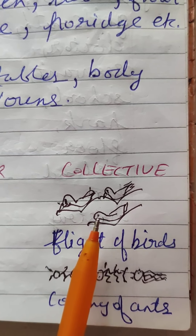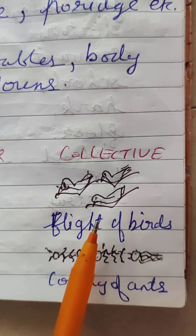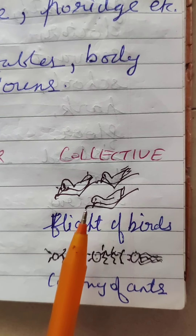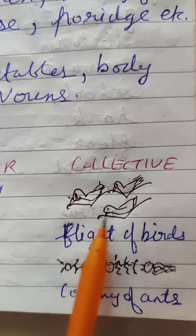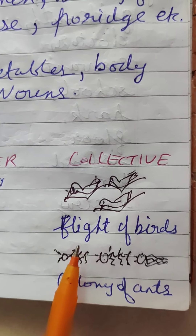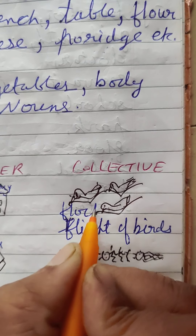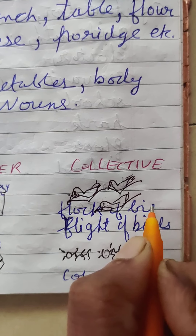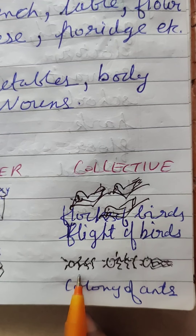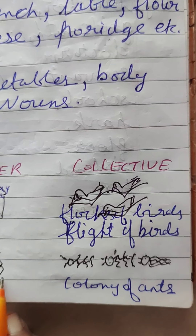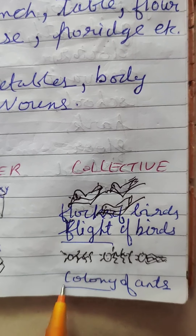Collective noun means collection of a group, taken as one. It is called a collective noun. Here, can you see birds are flying? Birds fly in the sky in a group - it is called a flight of birds, or a flock of birds. Can you see ants going one by one? It is a colony of ants. So flight and colony are collective nouns.